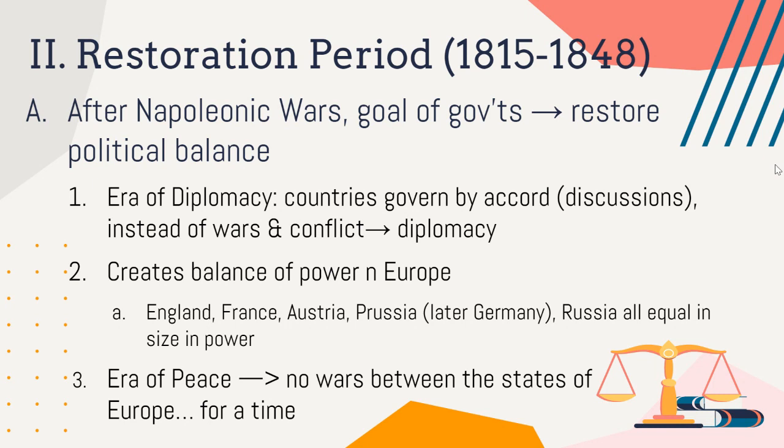After Napoleon loses, people ask: what do we do with this government, who's going to rule? They want to restore the monarchies. This is also known as an era of diplomacy. The Napoleonic Wars ruined the lives of hundreds of thousands of people over more than a decade. Across Europe, people said we don't want to fight anymore — instead, let's have this era of diplomacy, governing by accord and discussions rather than wars and conflicts.